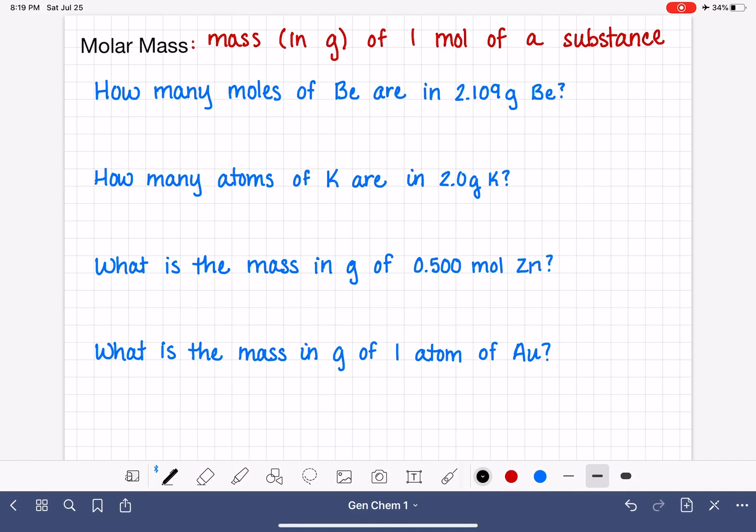So that means that you want to start the problem by writing the information that you know, the stuff that has been given to you in the problem. What we know is that we have 2.109 grams of beryllium. And just like other unit conversion problems, we know that we want to multiply that number by a conversion factor in the form of a fraction.